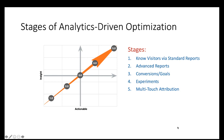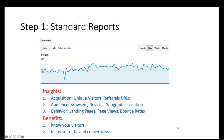There are five stages of analytic-driven optimization. We want to know who our visitors are and how they behave via standard reports. We further analyze their activities using advanced reports, we set our conversion goals, we design experiments and measure them, and we can use multi-touch attribution to figure out which channels and methods are most effective.